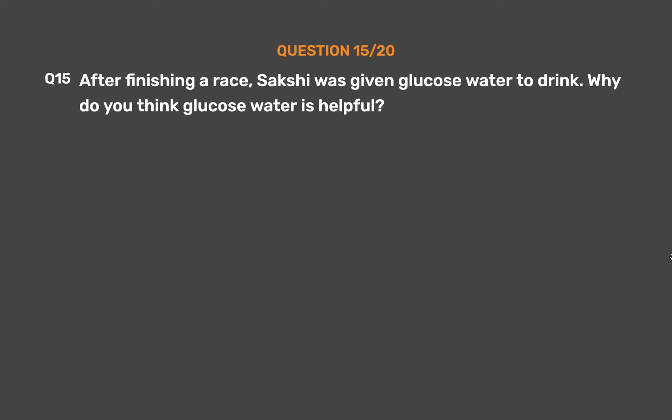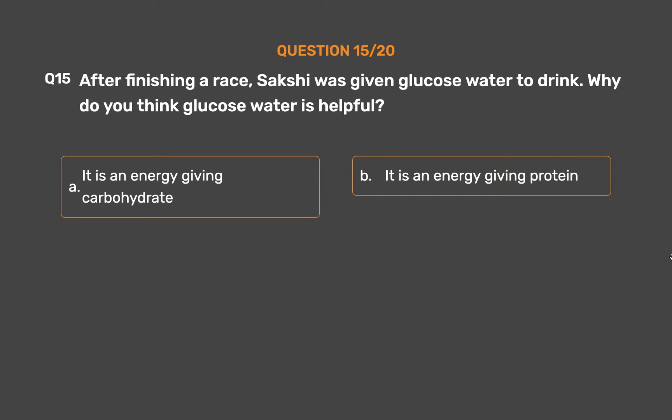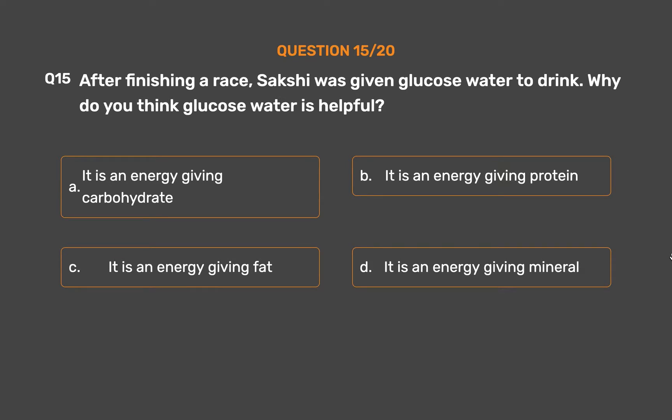Question number 15. After finishing a race, Sakshi was given glucose water to drink. Why do you think glucose water is helpful? Option A - It is an energy-giving carbohydrate. Option B - It is an energy-giving protein. Option C - It is an energy-giving fat. Option D - It is an energy-giving mineral.